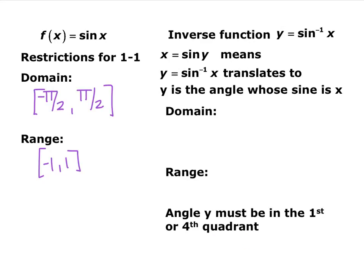We have our inverse trig function, our inverse sine of x. So y equals sine inverse of x — you switch your x and y's — which means you're solving for the angle that gives you this sine value. In a regular trig function, you plug in an angle and get out a ratio. In an inverse, you plug in a ratio and get out an angle.